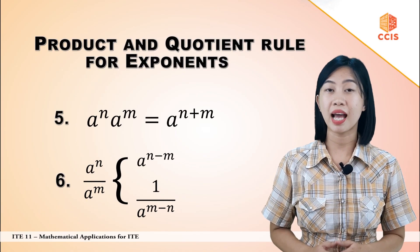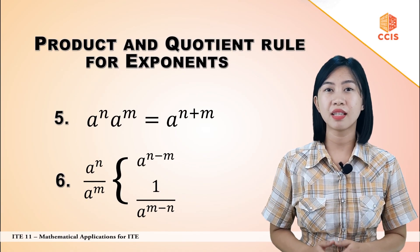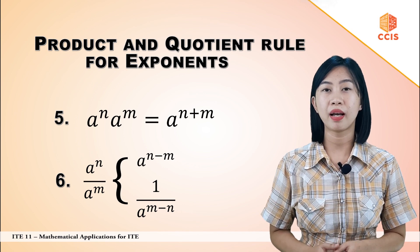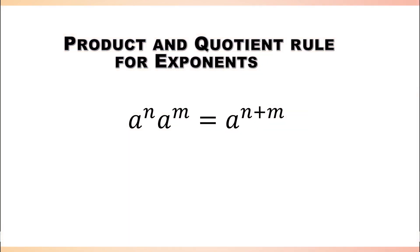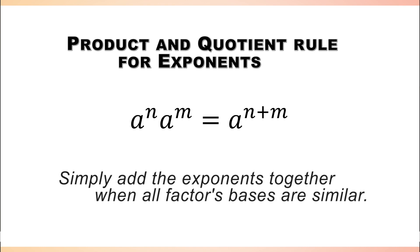Let's look at these two properties as a set, because they tell us how we can multiply and divide expressions that have the same base. The first property says that if we have the base a with exponent n multiplied by the same base a with exponent m, we can combine them by simply adding the exponents together.